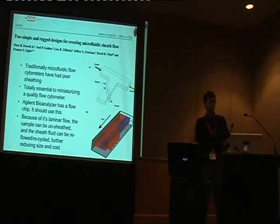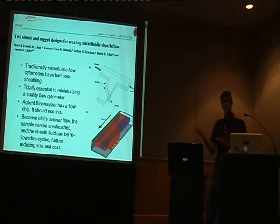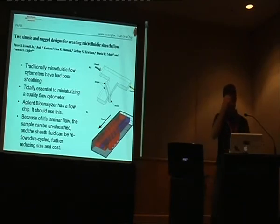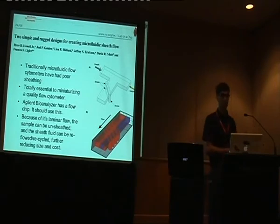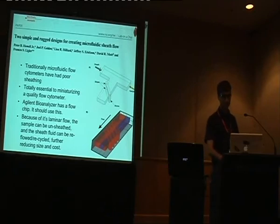Normally when you run flow cytometry, you have to run about a liter of saline per hour — and if you want to make a portable device, you can't lug liters of things around. With this system, you can recover 90% of your sheath fluid and just keep recycling it. I think these two things are really key if you want to make a small flow cytometer. I suspect the Agilent Bioanalyzer chip, if it survives another five years, will probably use this technology.